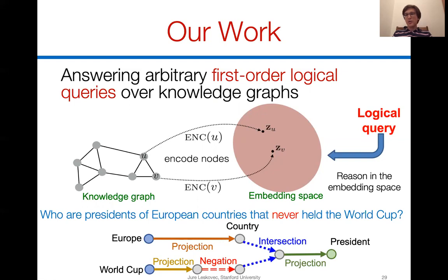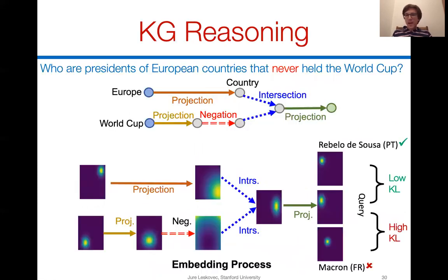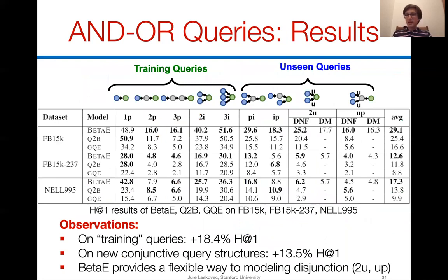For example, to answer 'who are the presidents of European countries that have never held the football World Cup,' we break this into simple predictive operators: identify all European countries, identify all World Cup hosts, find their intersection complement, then identify the presidents of those countries. We have developed a general probabilistic approach that learns to transform distributions over sets of entities across the embedding space, making accurate predictions on queries never seen during training by combining operators in arbitrary ways.